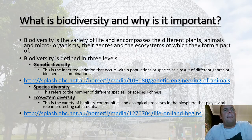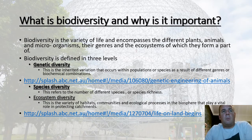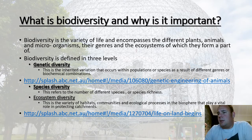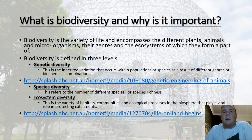An ecosystem needs species with strong genetic diversity. It also needs species diversity — the number of different types of animals. For example, there are many different species of insects, which makes certain ecosystems very strong. Then there is ecosystem diversity: the variety of habitats, communities, and ecological processes that play a vital role in protecting catchments. On the Central Coast we have beach ecosystems, lagoons, wetlands, and forest ecosystems — giving us good genetic, species, and ecosystem diversity, which makes the local biosphere quite strong.